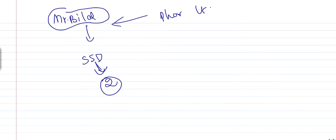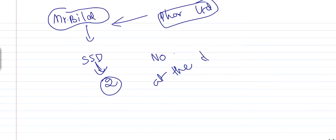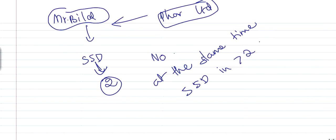Another exam question: Mr. Bilal is already a small shareholder director in two companies. Can he be appointed as a small shareholder director in Pharma Limited? The answer is no, because a person cannot be a small shareholder director in more than two companies. So Mr. Bilal cannot be appointed in Pharma Limited.